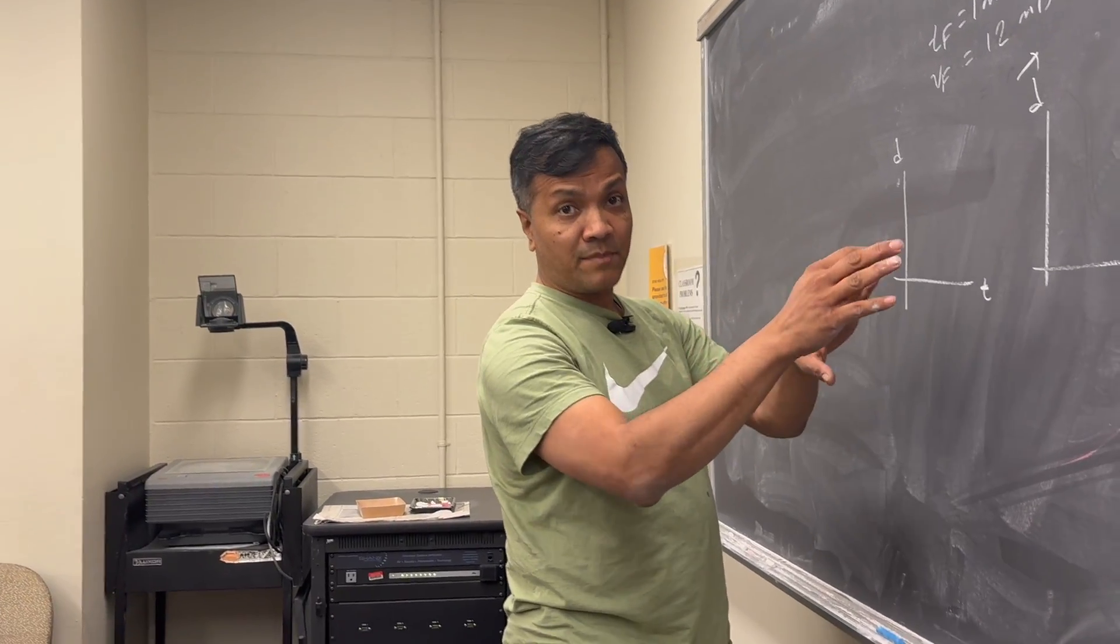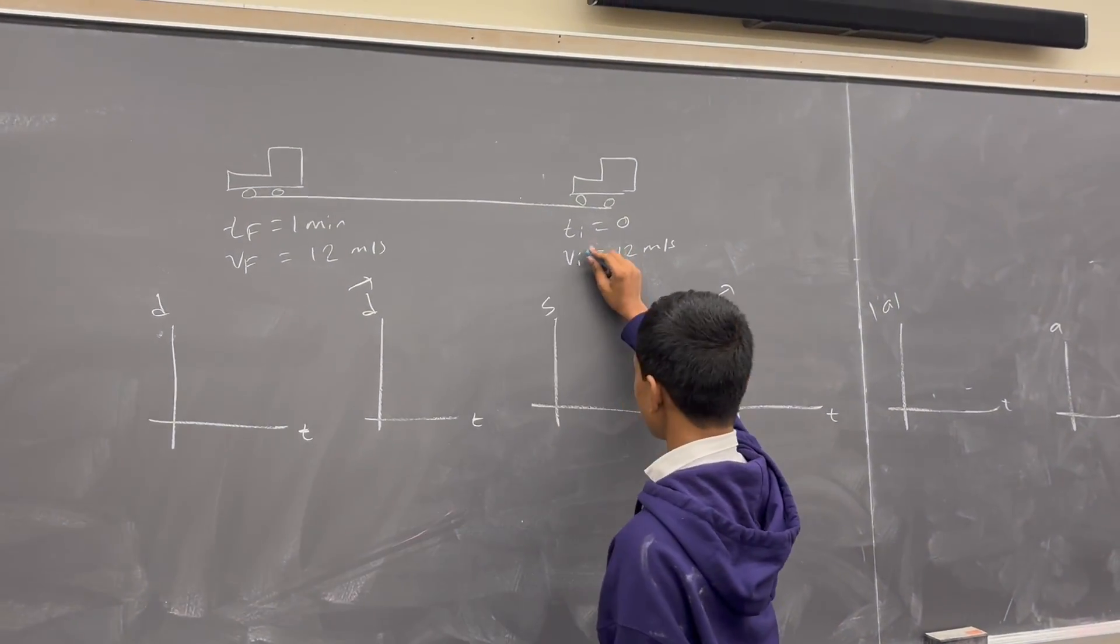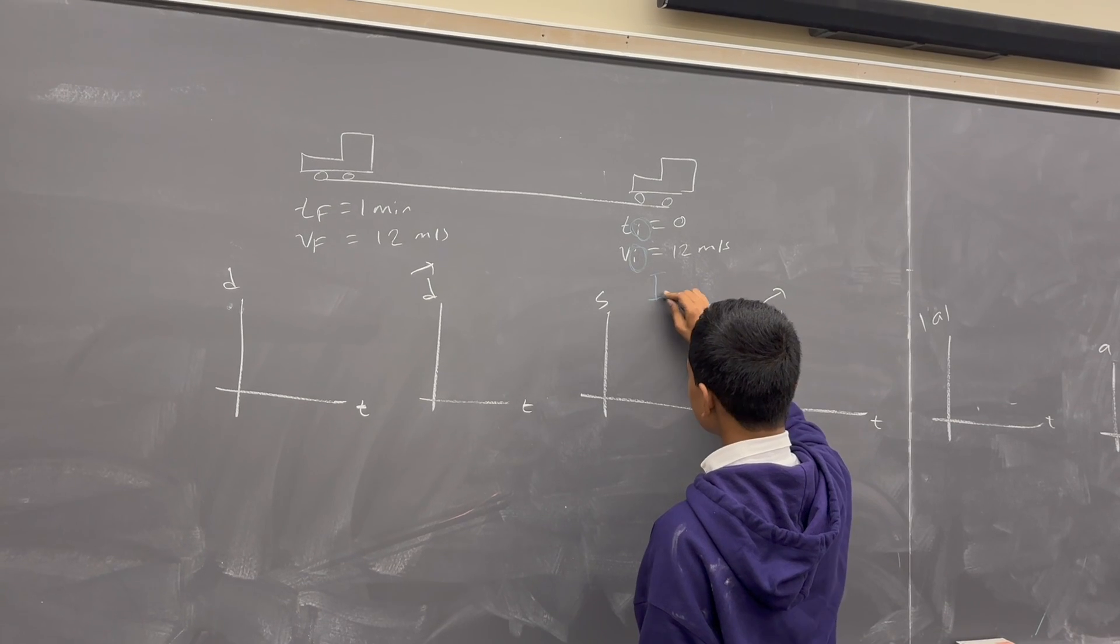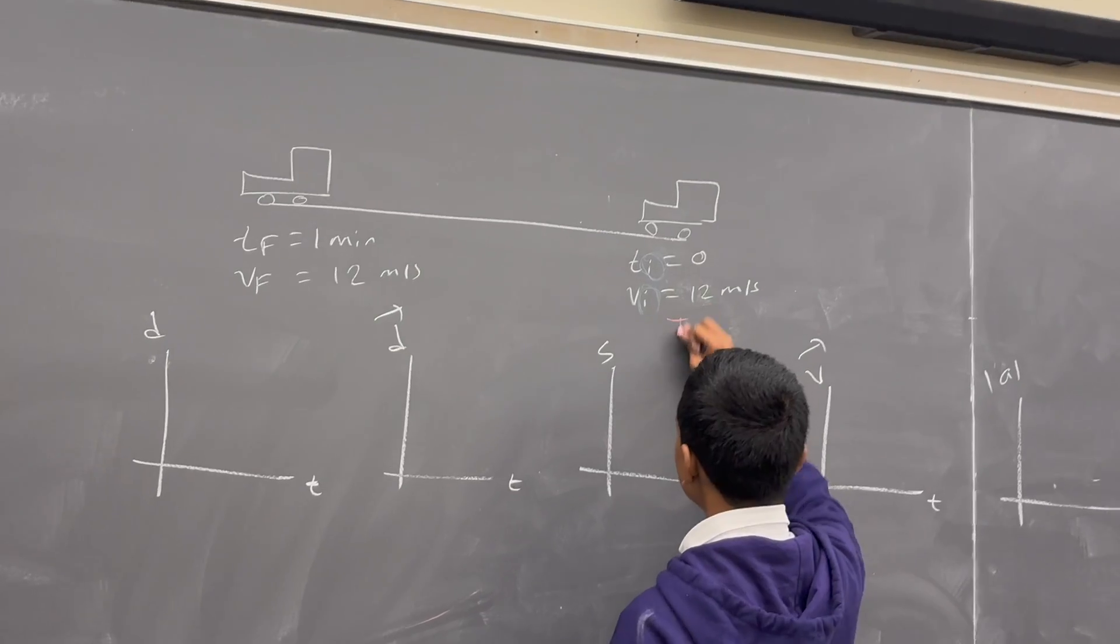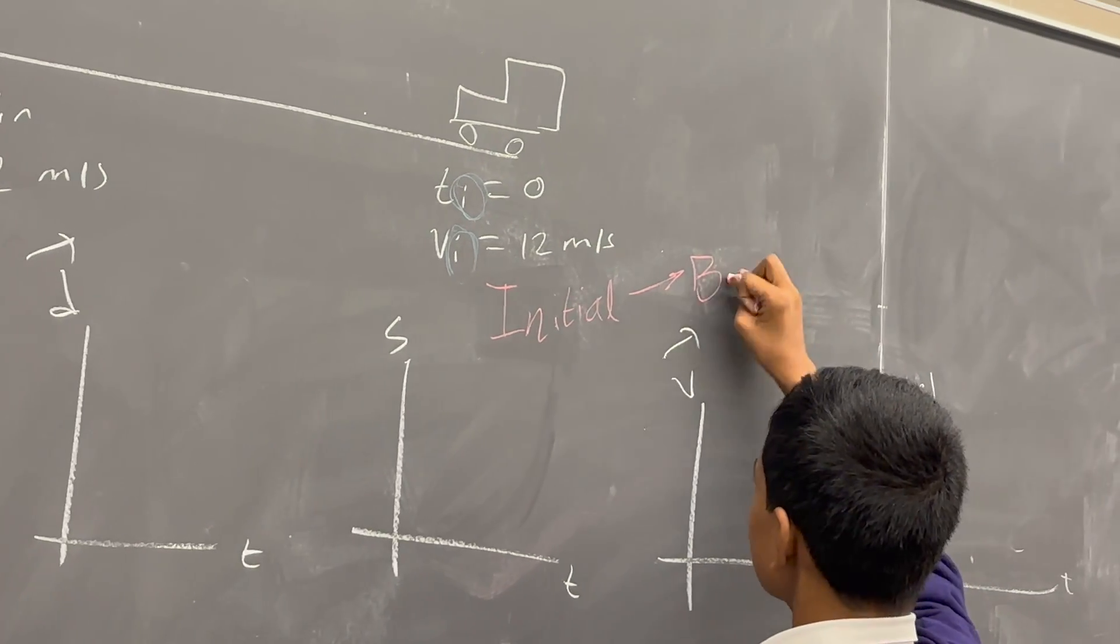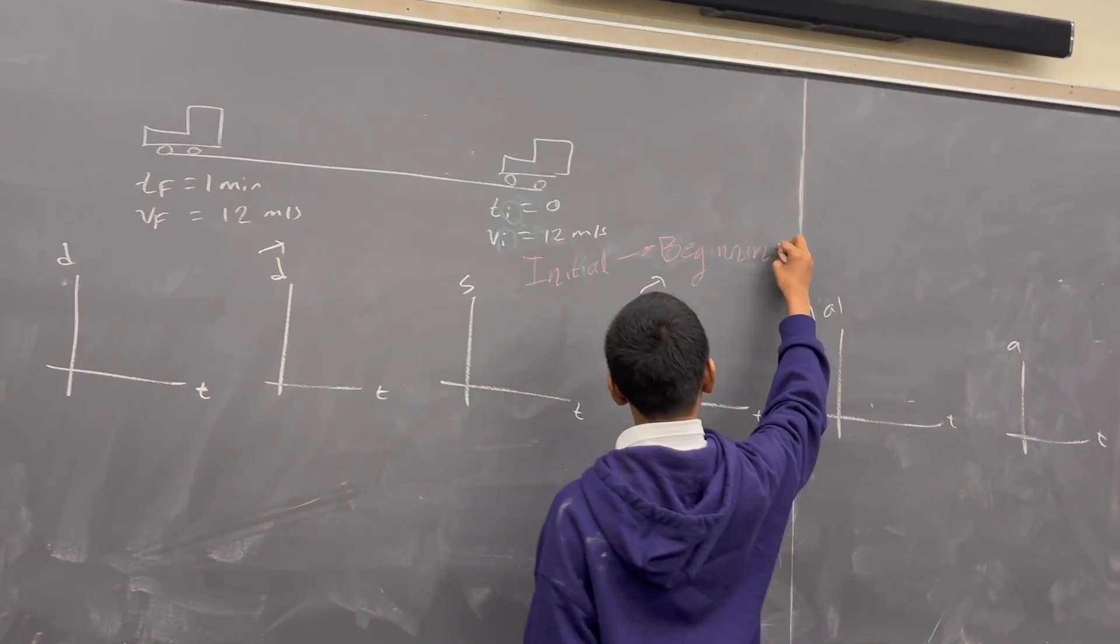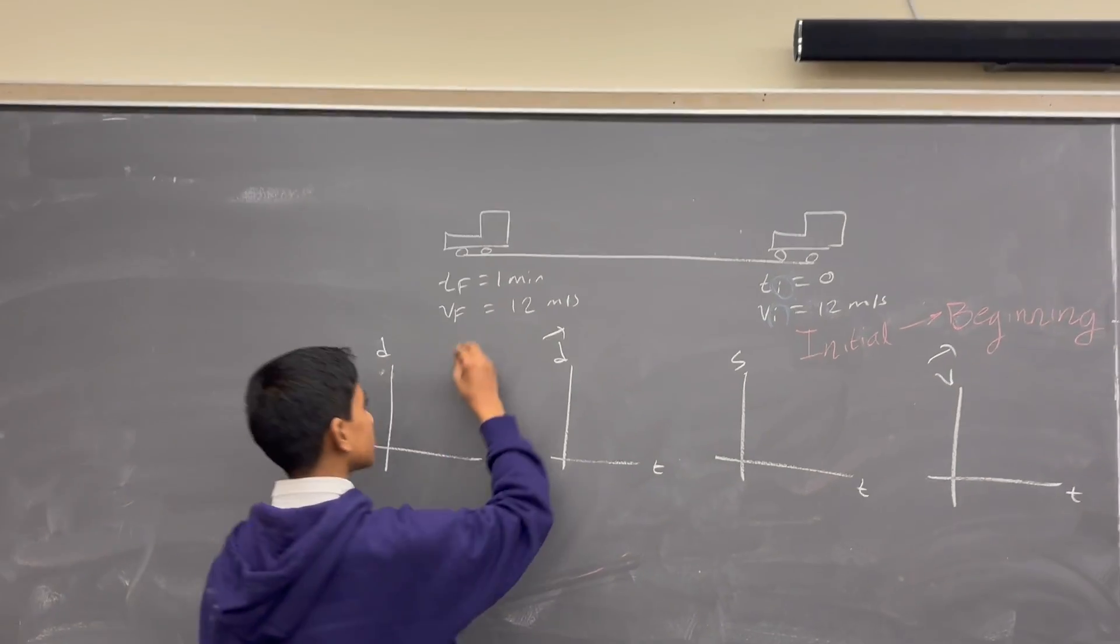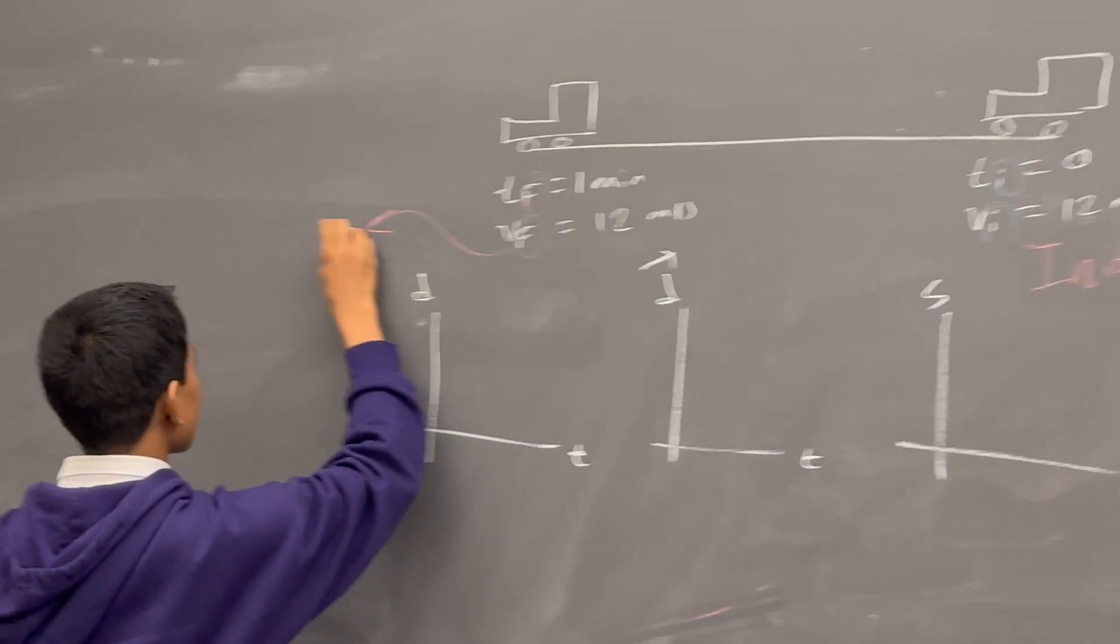I'm going to have a student draw the graph and write the equations before we do anything with that buggy we can see right here. There's an i subscript. What does i stand for? Initial. And what does initial mean? It means the beginning of something.